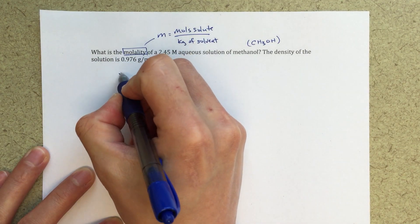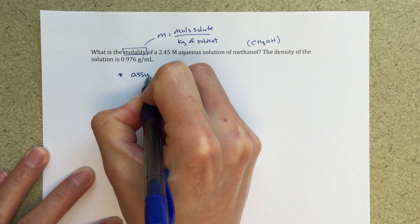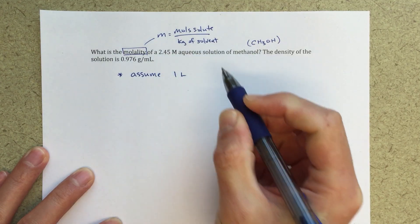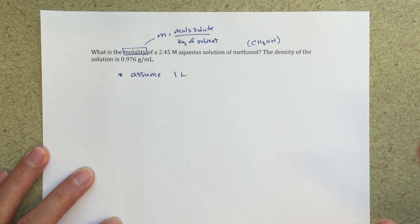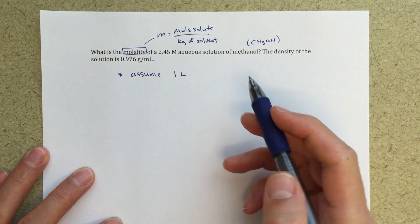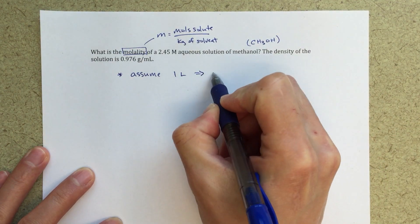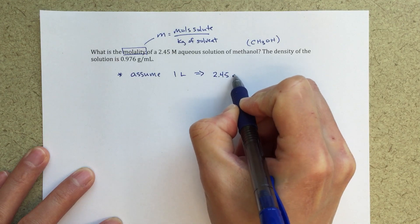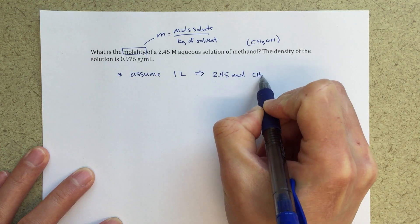The first thing that I'm going to do is assume one liter. The molality, the molarity, it's all going to be the same no matter how much I have. So it's convenient for me to assume one liter because therefore I will have 2.45 moles of methanol.